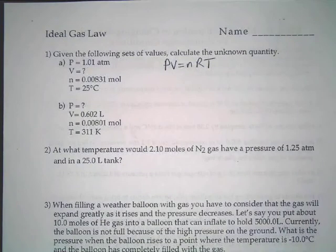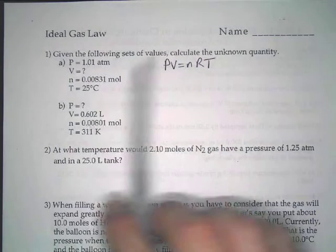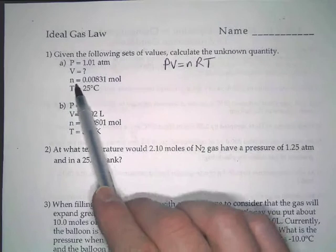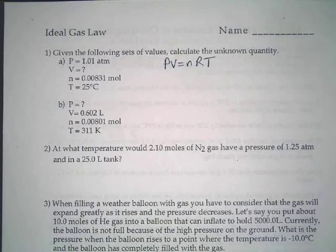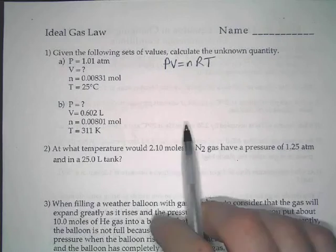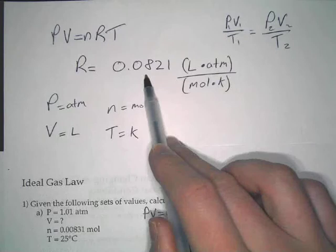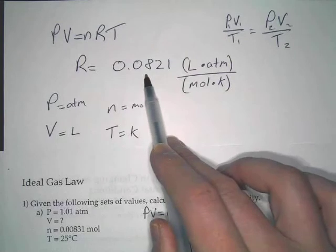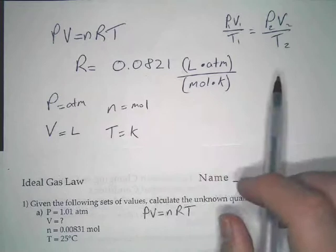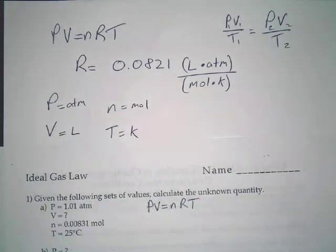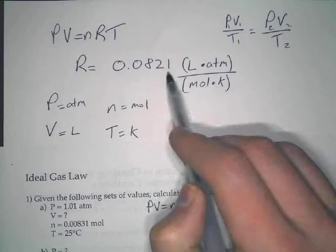So, because it even tells you ideal gas law, you're using PV, you're given an N, you're given a T. If you see N, you have to use it. R is our constant. Remember, it is this variable right here. So R will always be 0.0821. You might somewhere see it as 0.08206, but that's usually done in AP classes in college, so we're just going to do this.